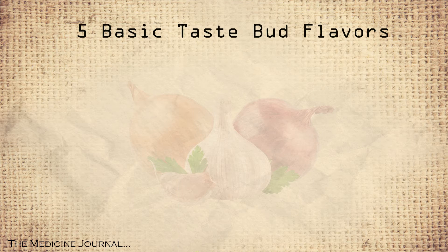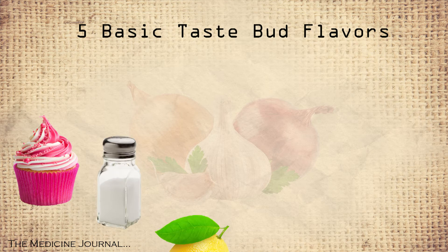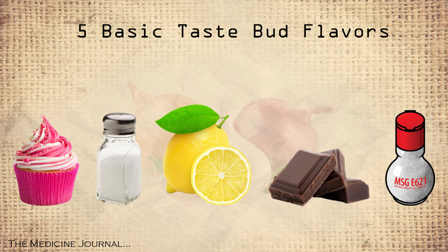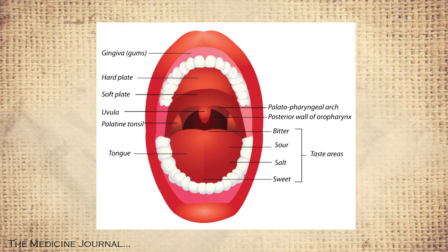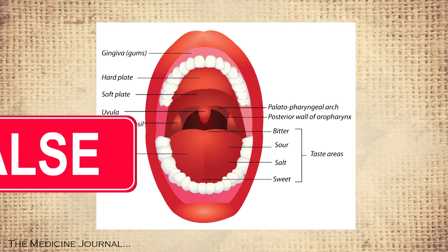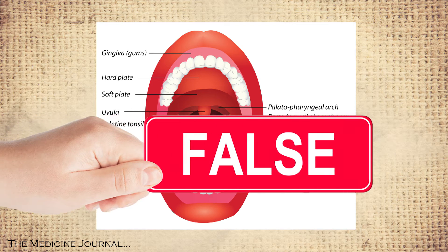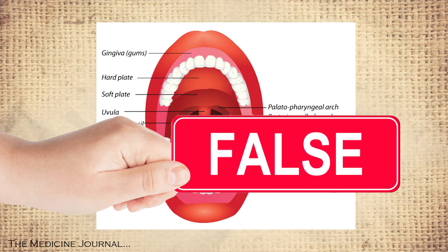There are five basic flavors our taste buds perceive: sweet, salt, sour, bitter, and umami — the flavor that comes from glutamate like monosodium glutamate. The idea that we have a taste map on our tongues where specific areas are responsible for flavors is false.